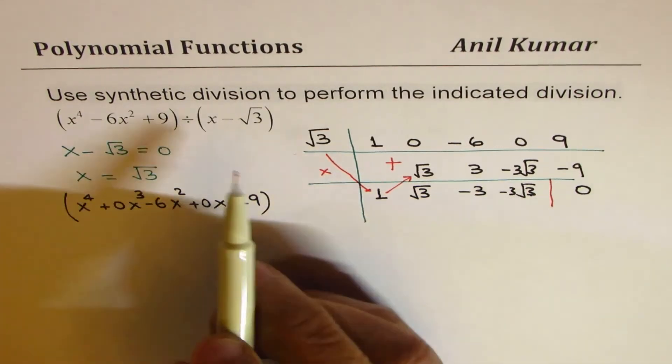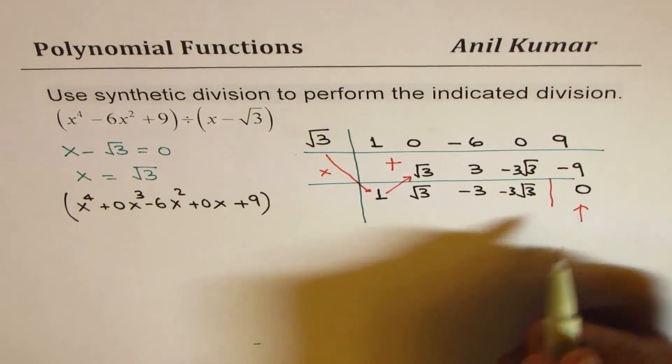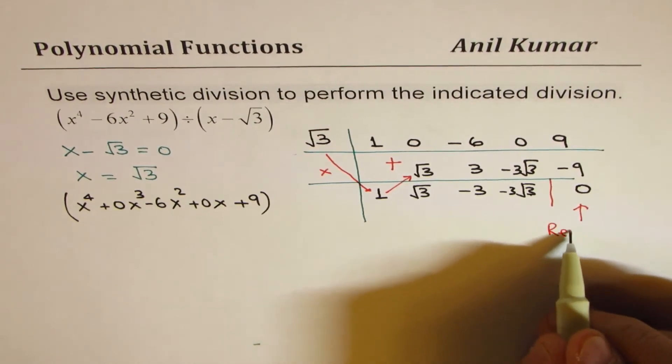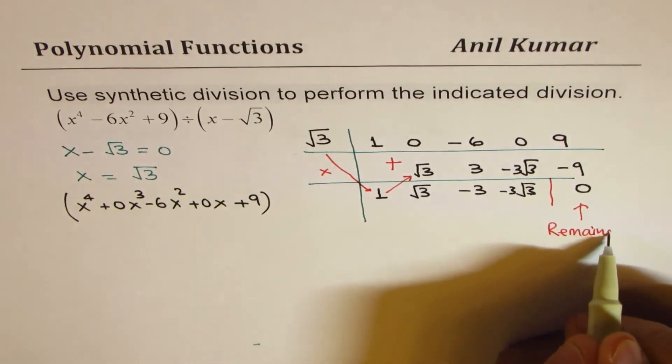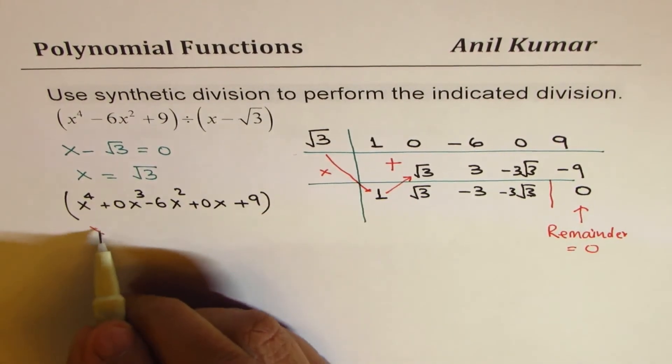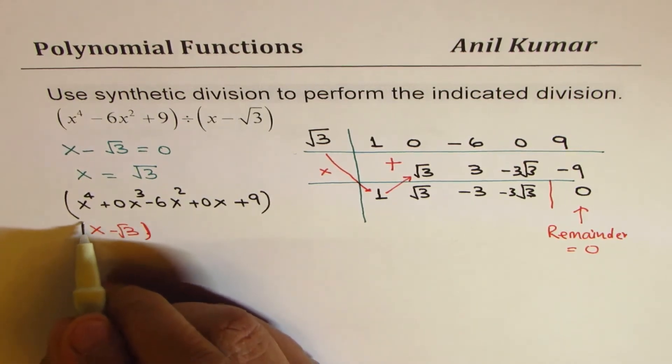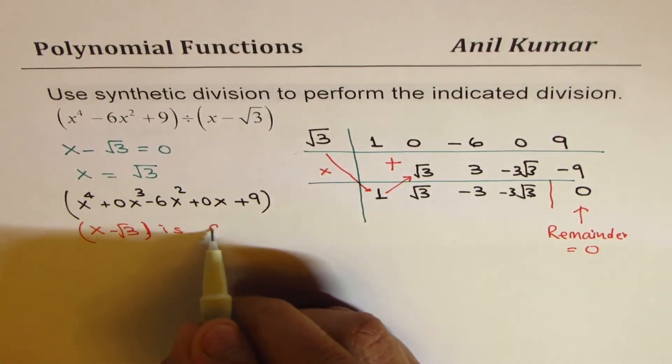That means that x minus square root 3 is a factor. Remainder is 0. That means remainder is 0. Perfect. And that means x minus square root 3, I mean square root 3, is a factor.